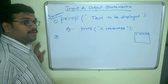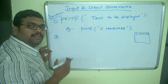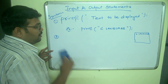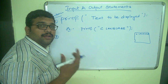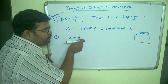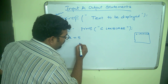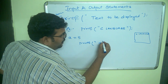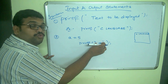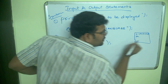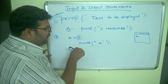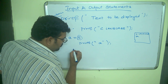Coming to the second case — what is the syntax to print the value of a variable? In the previous sessions we learned about variables and storing values. If variable a has value 5 and I want to print this value on the display screen, if I write printf("a") as in the first case, it will display the letter a. But I need the actual value of the variable.